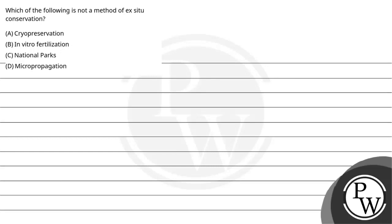Let's see this question. This question says: which of the following is not a method of Ex-situ conservation? The options are: A. Cryopreservation, B. In-vitro Fertilization, C. National Park, D. Micropropagation.